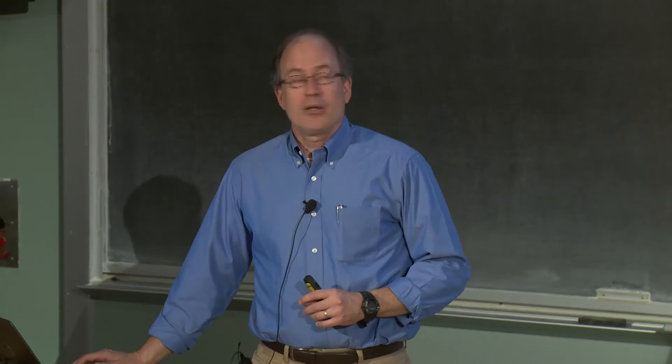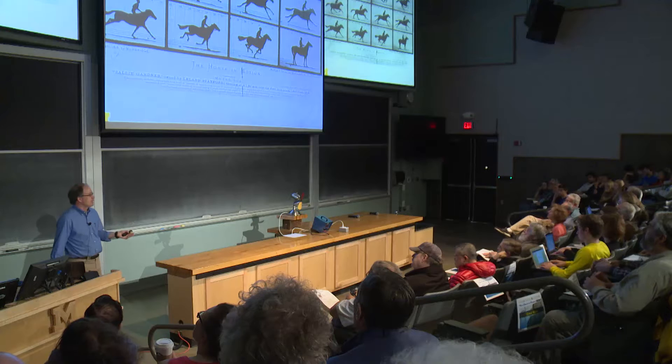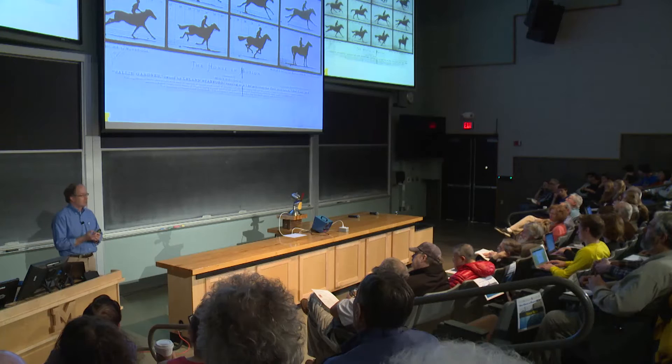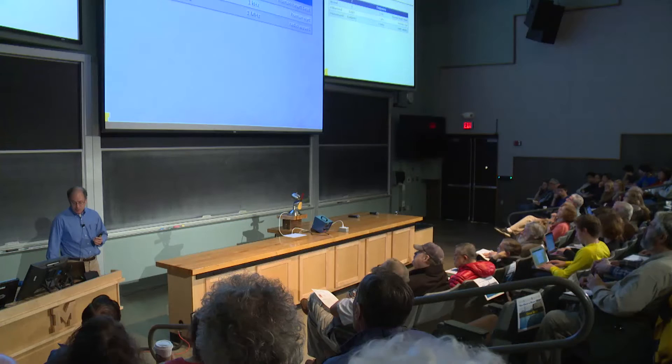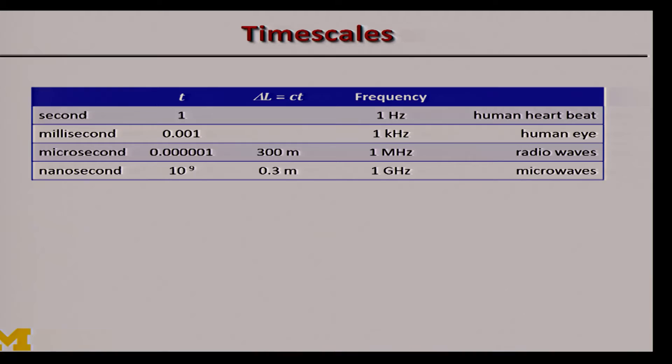This was the first example of stopping action by taking a very rapid image and then taking a sequence of them to understand the motion. This was done with a camera with a mechanical shutter. The best you can do with mechanical shutters is on the order of a millisecond — if you owned a good mechanical camera, the fastest shutter speed was typically one one-thousandth of a second. So how do we get beyond a microsecond down into the nanosecond range? By using short flashes of light, giving up on the mechanical shutter, and using a short flash of light instead.